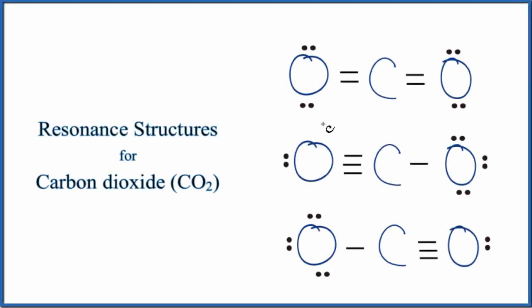In this video we'll look at the resonance structures for CO2, carbon dioxide. There are three resonance structures for carbon dioxide. If you count the valence electrons up for carbon dioxide, there are 16 total valence electrons.